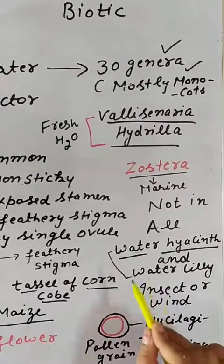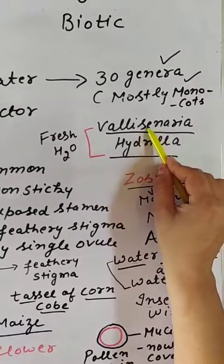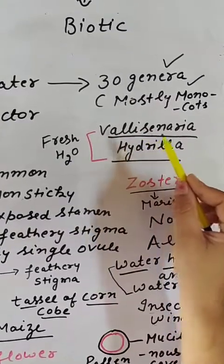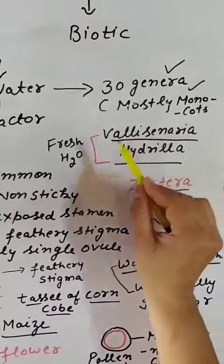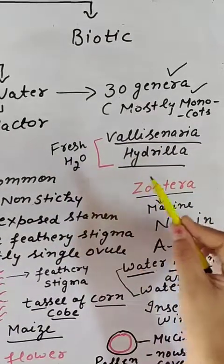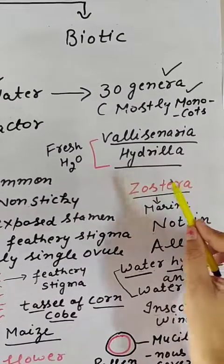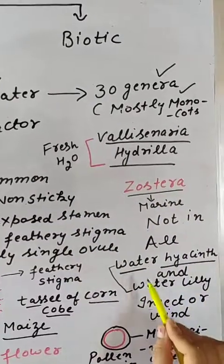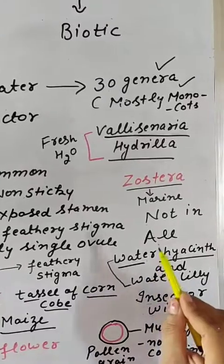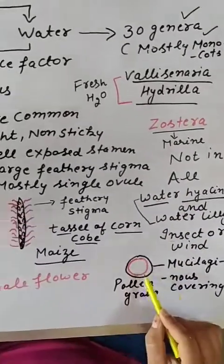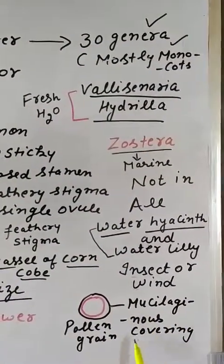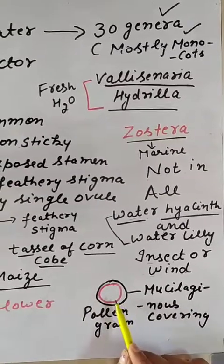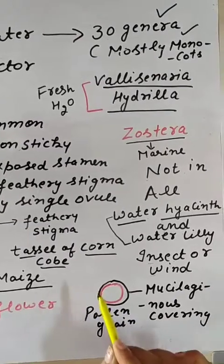In your exam, a common question is: give an example of plants in which water pollination takes place, particularly those present in fresh water or those that are marine. In case of water pollinated plants, the pollen grains have an outer covering known as the mucilaginous covering, which protects the pollen grain from wetting.